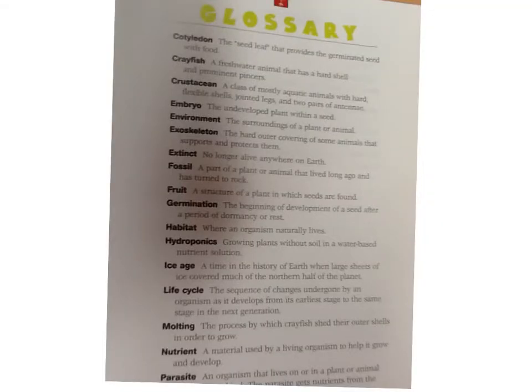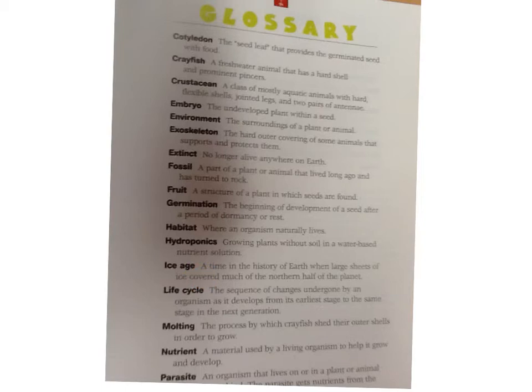Most nonfiction books have bold words, and those bold words are also in the glossary. Next to those bold words, it explains what it's about, what the word means. If the reader doesn't understand, they can look it up — kind of like: 'Ice Age: a time in the history of Earth when large sheets of ice covered the northern half of the planet.' Kind of like that.